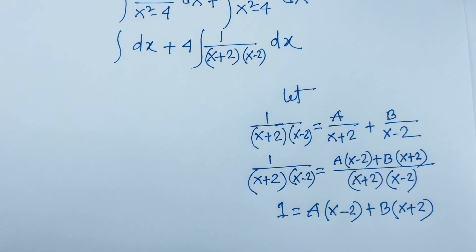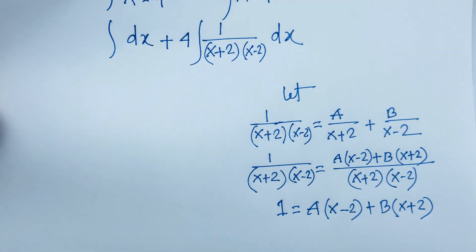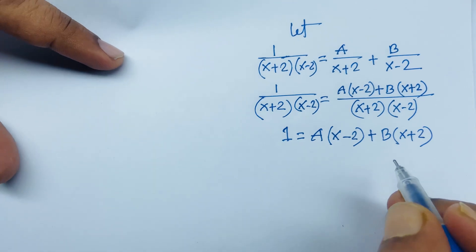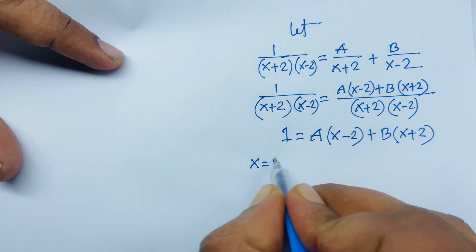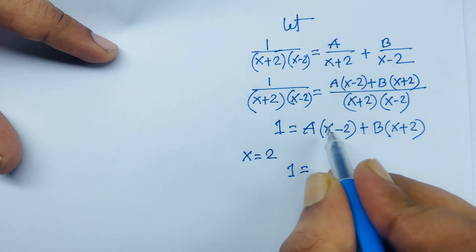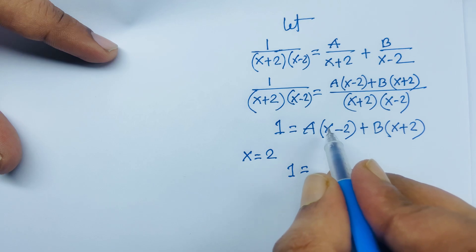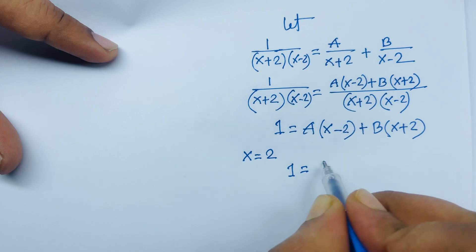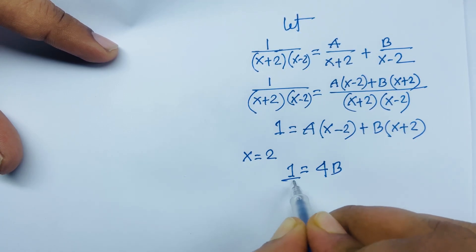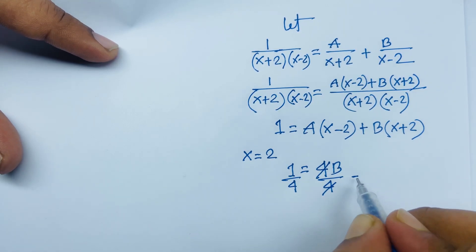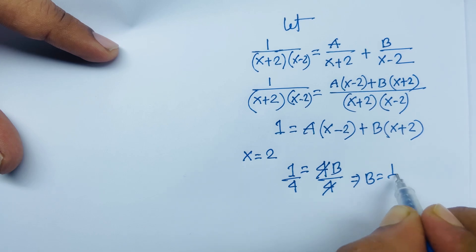To find B, we substitute x equals 2. The A term becomes zero since (2 minus 2) equals 0. So 1 equals B times (2 plus 2), which is 4B. Dividing both sides by 4, we find B equals 1/4.